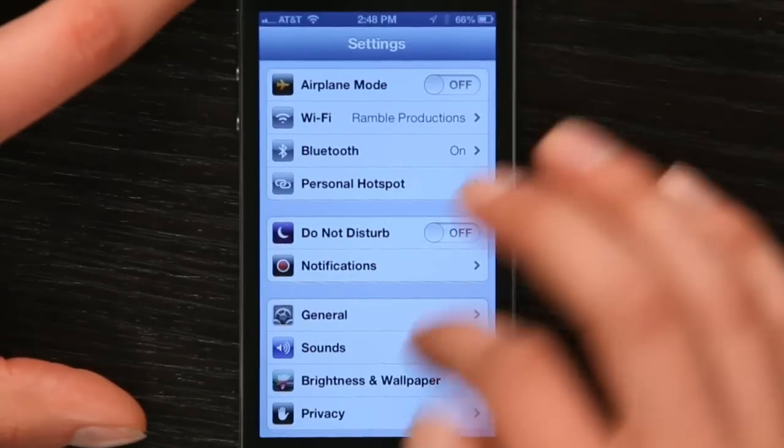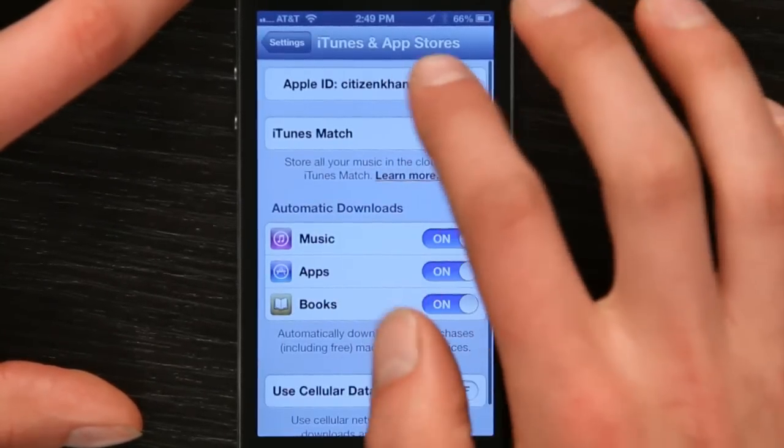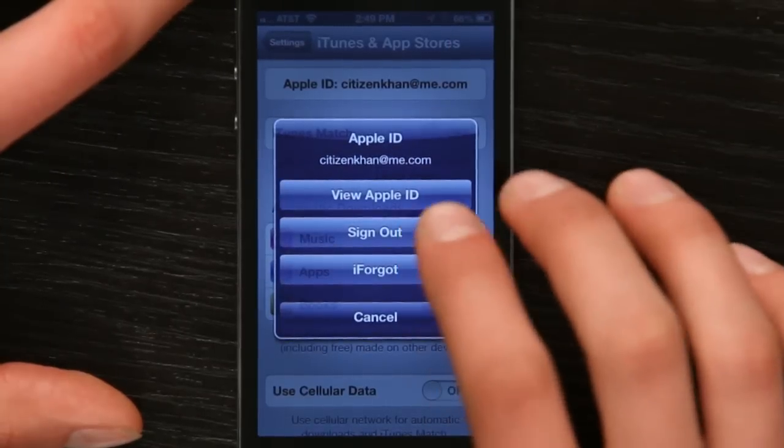So let's take a look at something. If I go to settings and I scroll down, you'll see iTunes and App Stores. I'm going to tap on the Apple ID and then tap sign out.